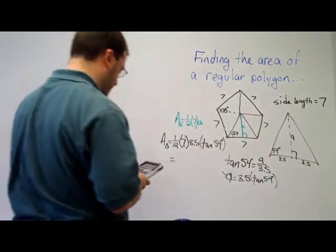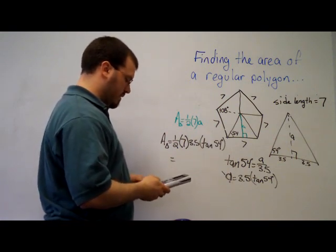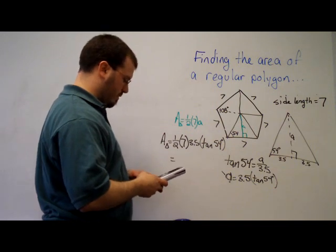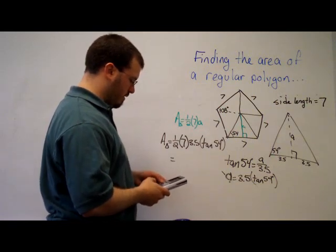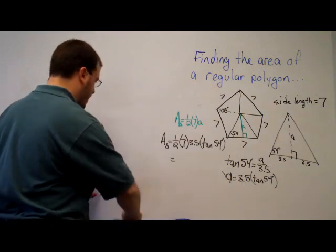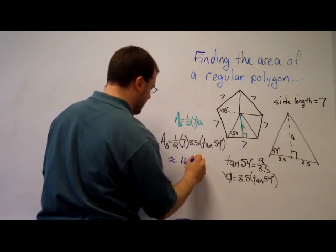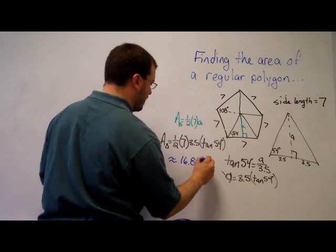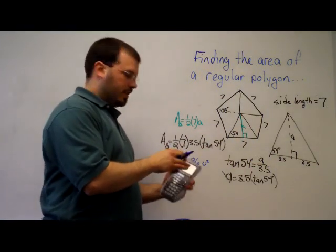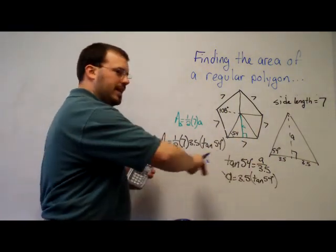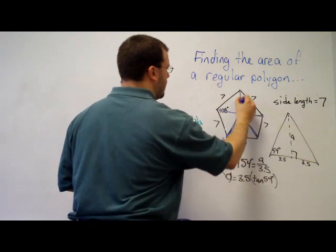So I'll go to my calculator now, type that in. One half times 7 times 3.5 times the tangent of 54 degrees. And of course make sure you are in degree mode on your calculator. And each triangle is approximately 16.86. I didn't have units, so I'm just going to say units squared. Now I'm going to leave it in my calculator stored because I don't want to round yet. I don't want to round until the very end of my problem.